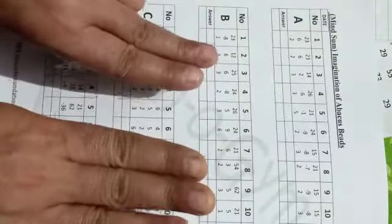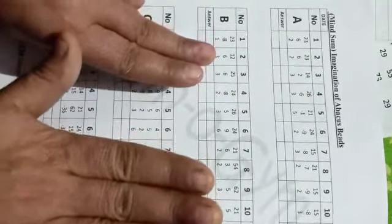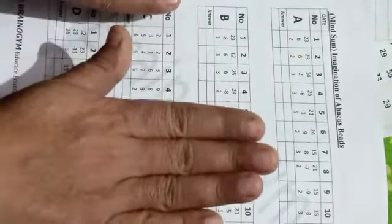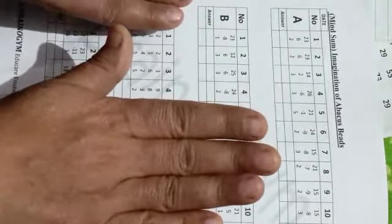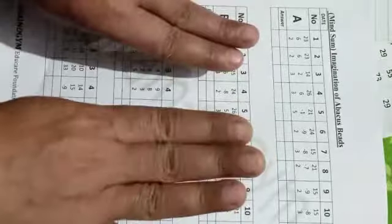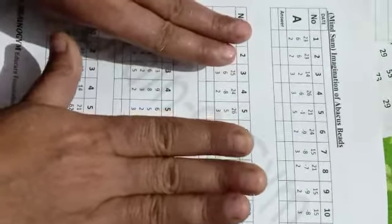23 add 6. 2 is not available, so we use the big friend. 2's friend is 8, down add 10, so the answer is 31. Write down your answer.